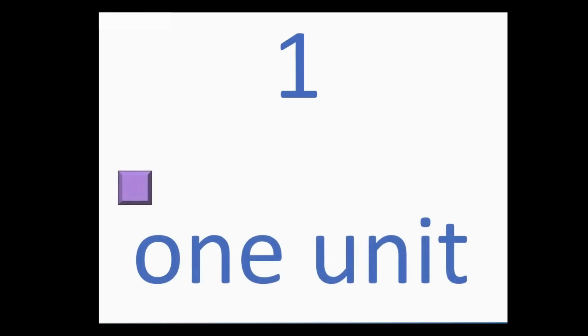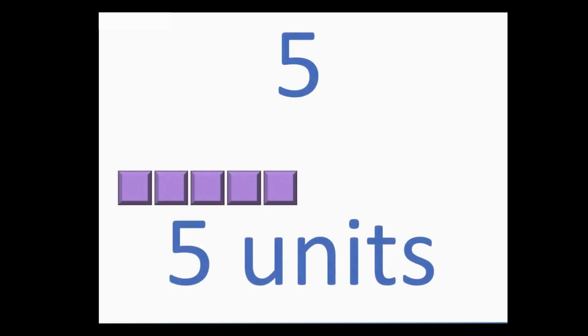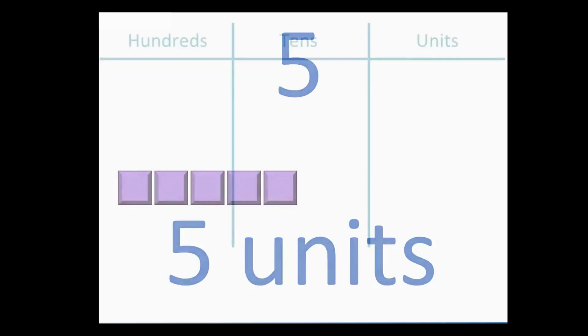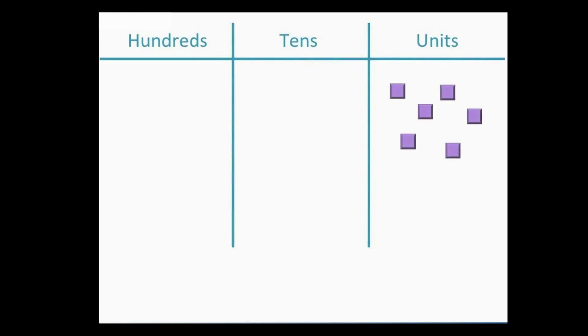One single block is worth one, or one unit. So this is two, three, four, five — or five units. In this example we will see what number is represented by the base 10 blocks. We write units in the units column.